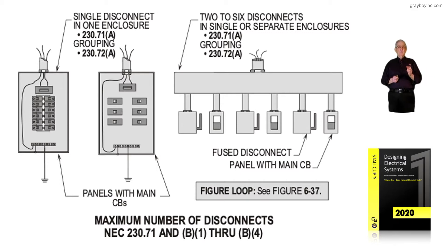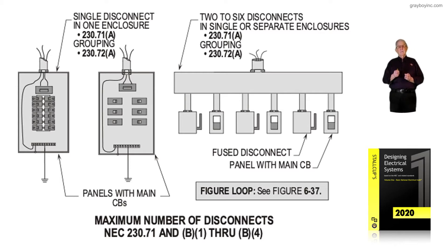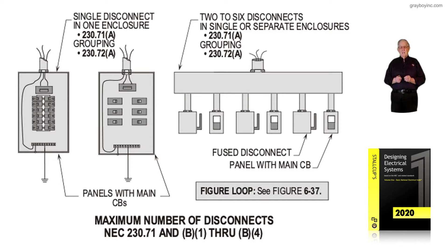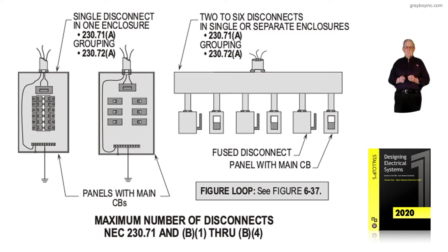To the left, we have a main ahead of those circuit breakers in that panel board, so everything is grouped in a single enclosure, but we had to have a main. In the 2017 edition and previous editions of the NEC, look at the service panel in the middle of the illustration. It has to have a main by the 2020 edition of the NEC. But the 2017 NEC edition, we could have had six individual mains in that panel board without a main ahead of them. Not so in the 2020 NEC.